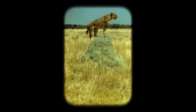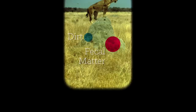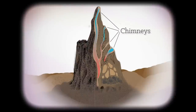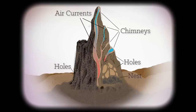They look like big, gigantic mounds of dirt. It is, to some extent, dirt, but a large part of it is actually composed of the fecal matter of the termites. These mounds are interesting because a lot of people think that the termites live in the mounds — they don't. They're actually chimneys. The nest itself is just below ground at the base of the mound. The way these mounds function is that there are little holes so that air currents ventilate the nest that's underground.